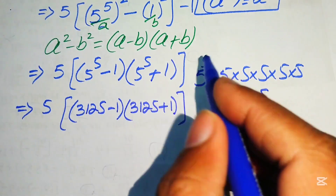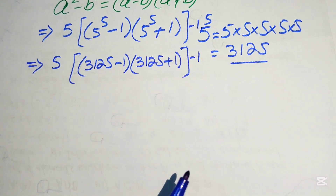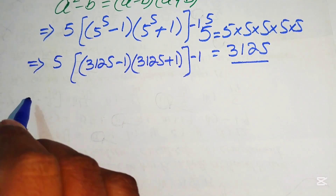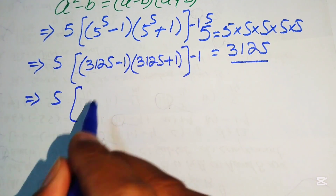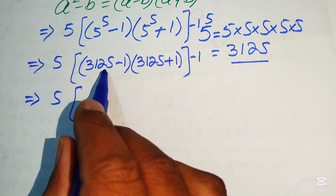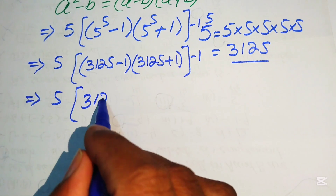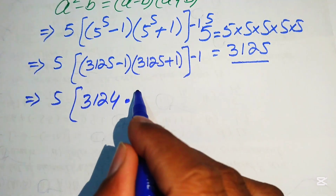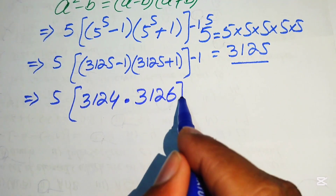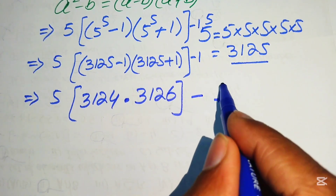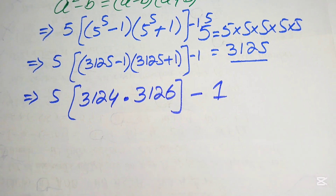We replace 5 to the power of 5 with 3125. The expression becomes 5 times 3125 minus 1 times 3125 plus 1, and then minus 1. So we compute: 3125 minus 1 equals 3124, and 3125 plus 1 equals 3126, and we carry the minus 1.